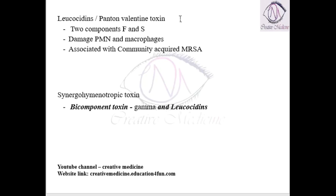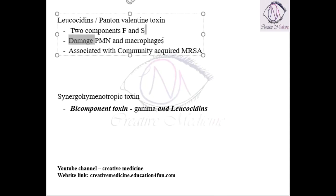Leucocidin, or Panton-Valentine Toxin, is seen in Staphylococcus aureus. This toxin has two components: the F component and the S component. It causes damage to polymorphonuclear leukocytes and macrophages. Panton-Valentine Toxin is associated with community-acquired methicillin-resistant Staphylococcus aureus (CA-MRSA).